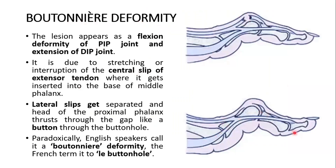This is the deformity — it appears as a flexion deformity of the proximal interphalangeal joint. This is the proximal interphalangeal joint in flexion, and this is extension of the distal interphalangeal joint. The distal interphalangeal joint is extended.